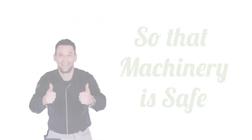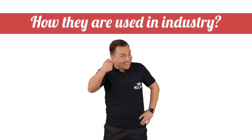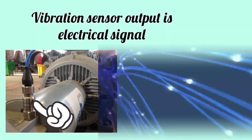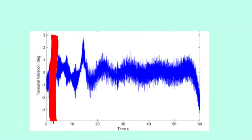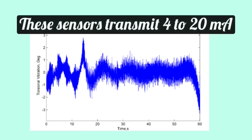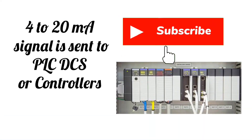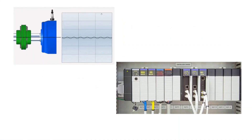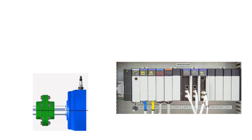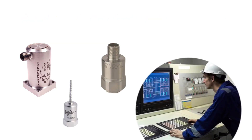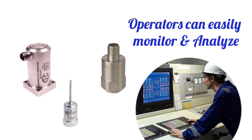How is this done? Vibration sensors output an electrical signal. According to the overall vibration level, these sensors transmit a 4 to 20 mA signal, which is sent to a PLC, DCS, or controller, which stops the machinery at high vibration levels and avoids machine failure. With the help of vibration sensors, operators can easily monitor and analyze the equipment.